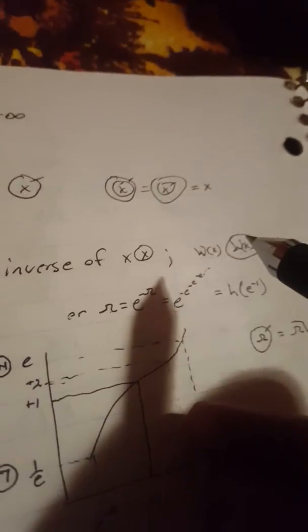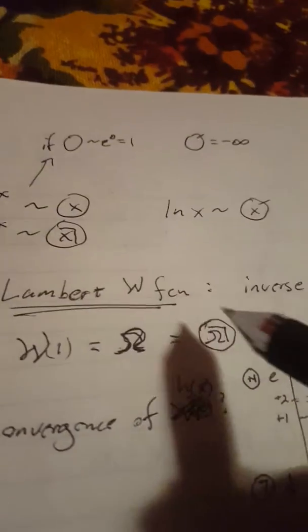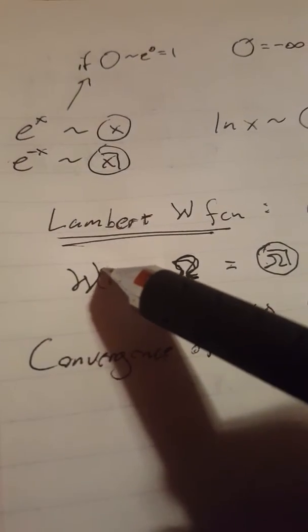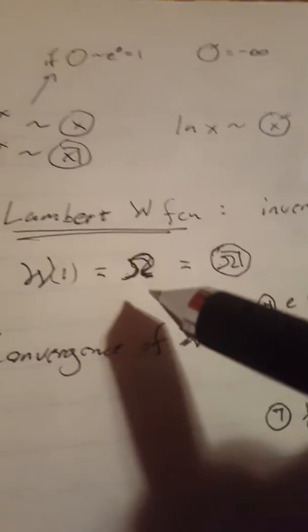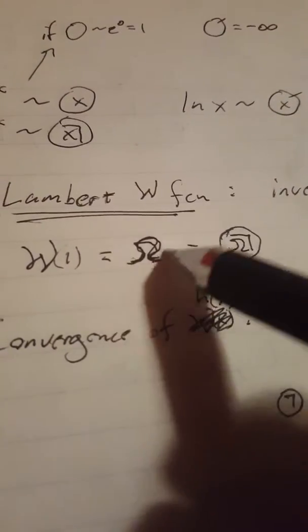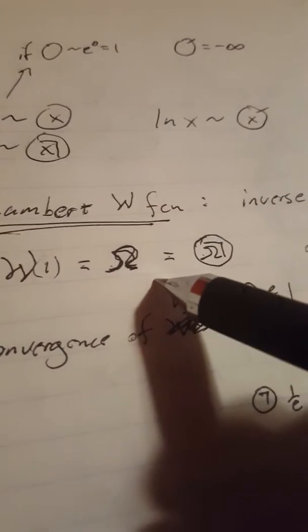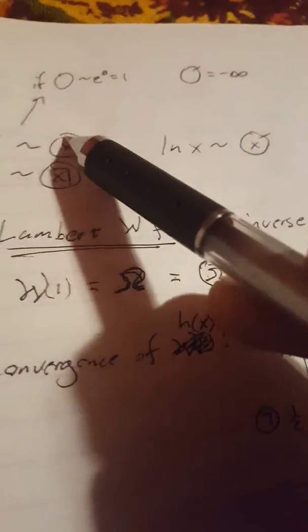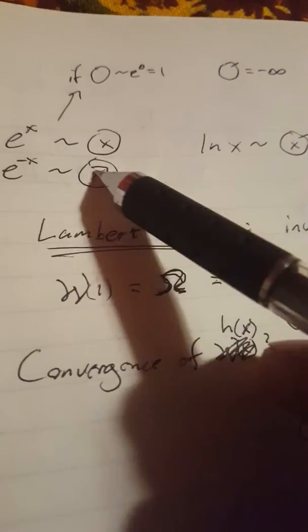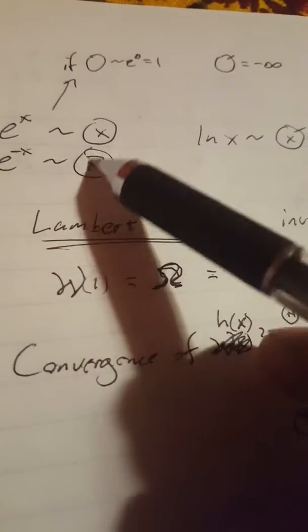And even in a special functions class, you may not even really talk about it very much. You may pull it out to solve something. But W of one is what's known as the omega constant. This is a really ugly omega. But pretend this is an omega. And given this definition, where if you have a negation sign inside your exponent, that's sort of like e to the negative x.